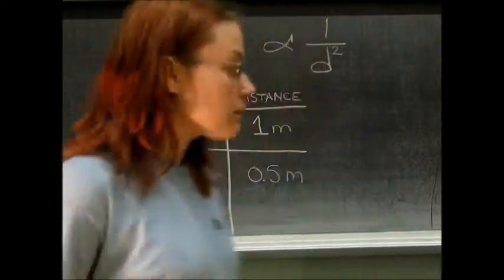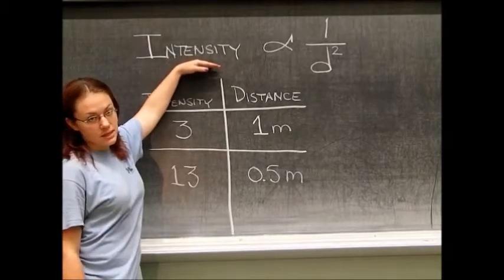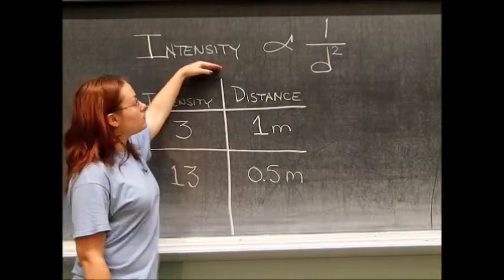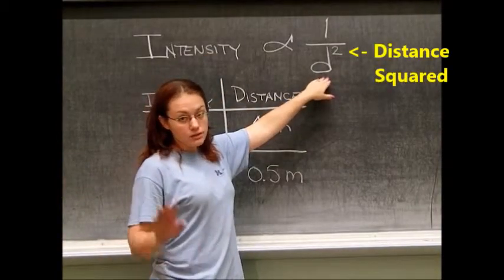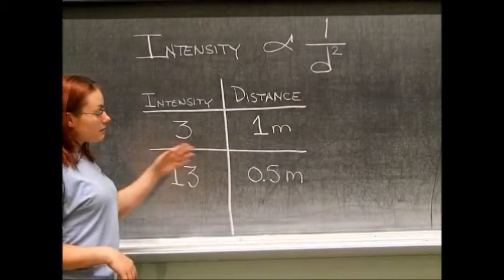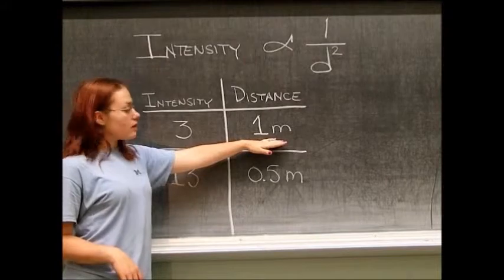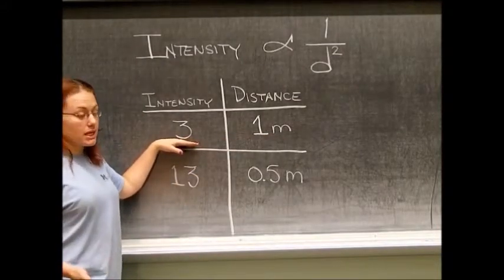If we go ahead and review our results, we know the definition: the intensity of the light that is impinging on our detector will be proportional to one over the distance separating our source to our detector. And based on our results, when we were one meter away from our detector, we observed approximately three rotations.